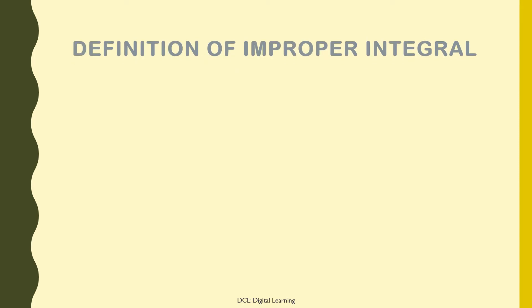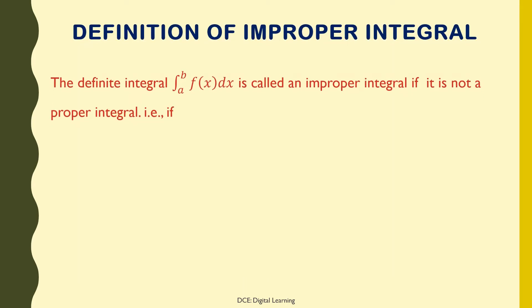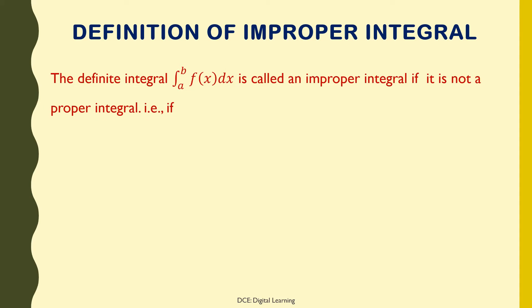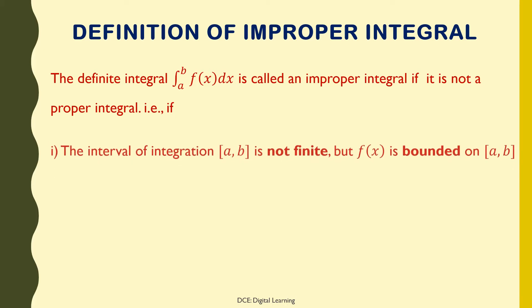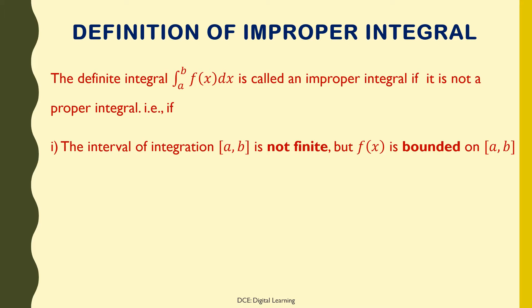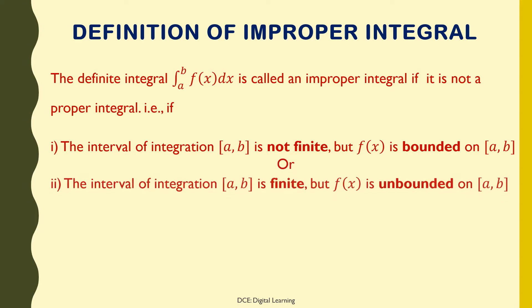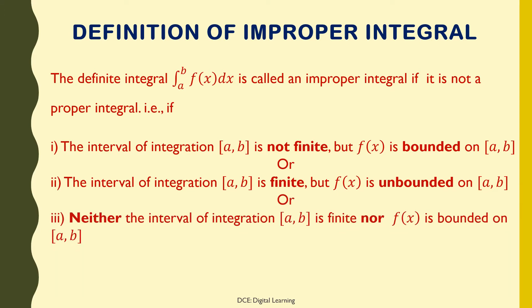Recall the definition of improper integral. The definite integral of f dx from a to b is called an improper integral if it is not a proper integral. That is, if the interval of integration [a,b] is not finite but f is bounded on [a,b]; or the interval of integration [a,b] is finite but f is unbounded on [a,b]; or neither the interval of integration [a,b] is finite nor f is bounded on [a,b].